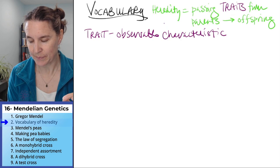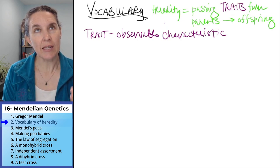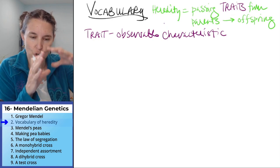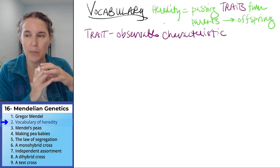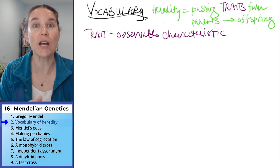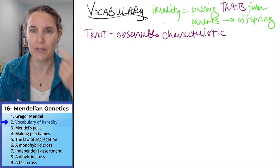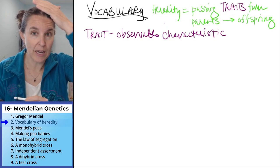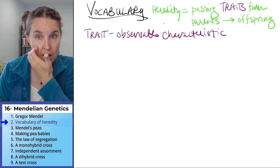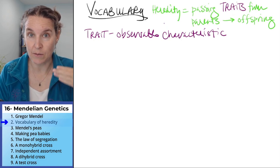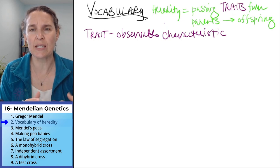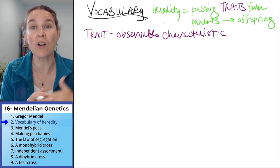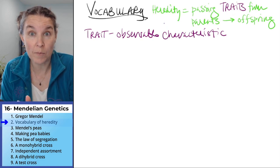Traits can come in flavors. A trait is a big picture, broad, generalized characteristic — like eye color, height, hair curl, melanin production. These are all things that are traits. They're broad and general. But there are specific forms of the traits.